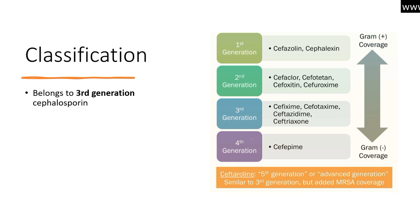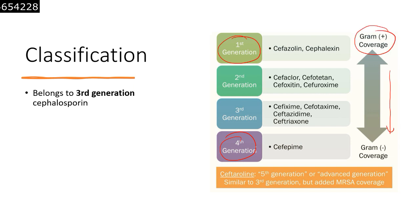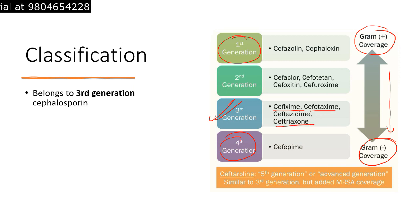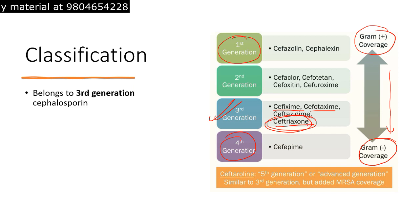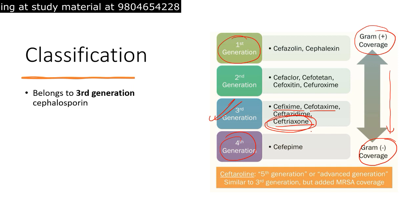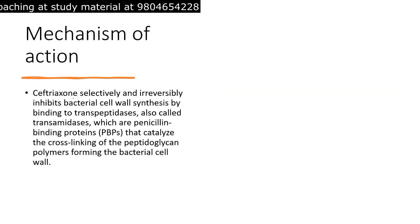Ceftriaxone belongs to the third-generation cephalosporins. There are currently five generations of cephalosporins. From first to fourth generation, the gram coverage changes — first generation covers gram-positive bacteria, while moving toward fourth and fifth generation covers more gram-negative bacteria. Third-generation cephalosporins include cefixime, cefotaxime, and ceftriaxone, and they are mostly active against gram-negative bacteria.